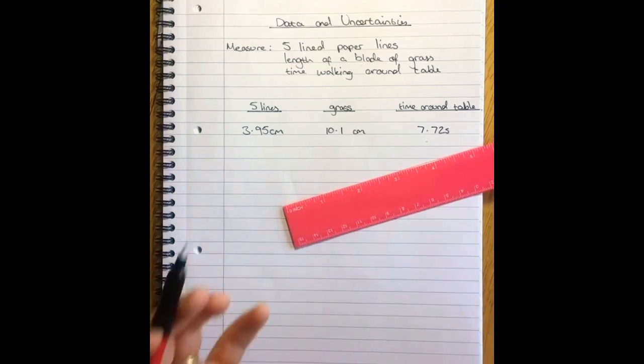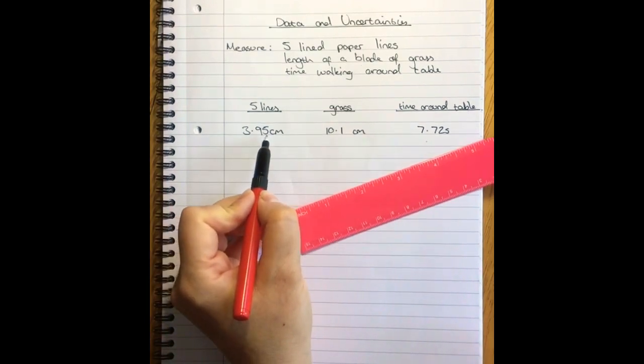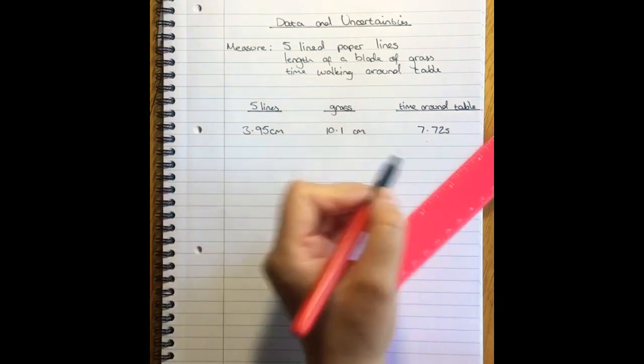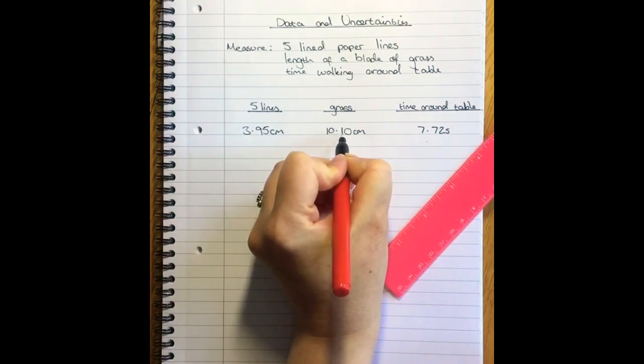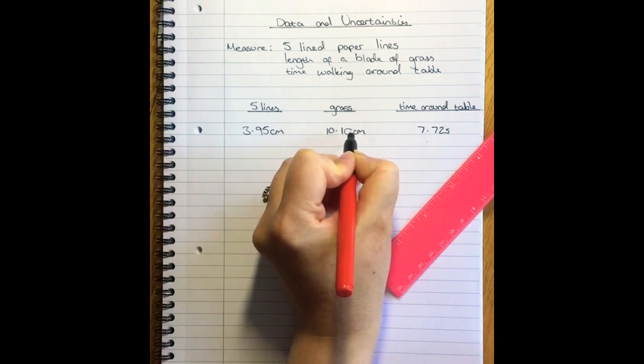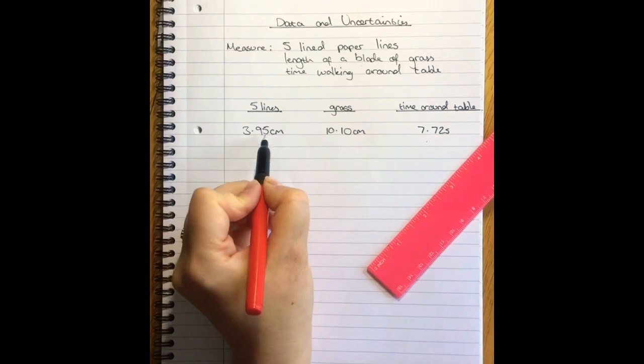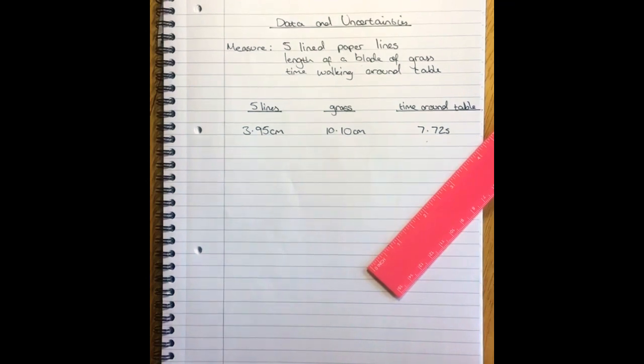So if I'm saying that my grass is 10.1 centimetres, and for my measurement of five lines I've said it's 3.95, I should be able to say that that one there, if that's landing right on a millimetre line, that there is zero fractions of a millimetre after it. If I was able to do it to two decimal places on this one, I should also be able to state this to the same level of precision.